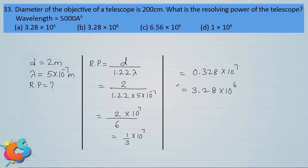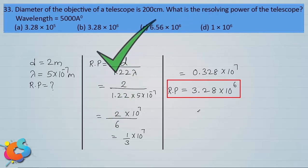The resolving power is the reciprocal of the limit of resolution, and its value is 3.28 into 10 power 6, which is correctly given in option b. Therefore option b is the correct answer, that is 3.28 into 10 power 6.